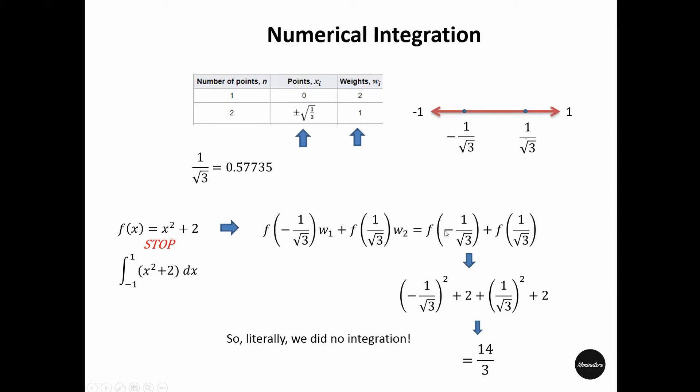Evaluating this function at minus 1 by root 3 would mean that we put in place of x minus 1 by root 3 squared squared and plus 2. So here goes the first part. And for the second part, we do the same thing. Instead of x squared, we put 1 by root over 3 squared and plus 2. And when we add them up, we indeed get the value 14 by 3.